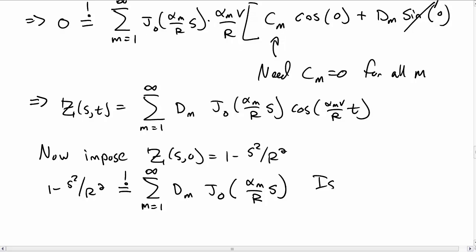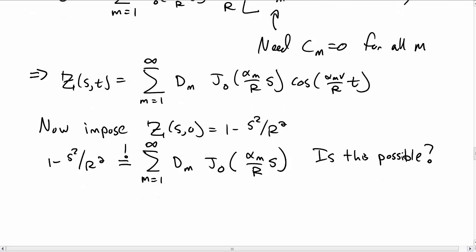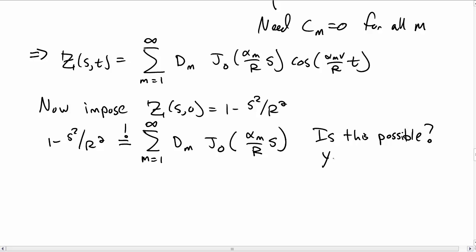So it's kind of an open question at this point, is this even possible? Can you find a way to write 1 minus s squared over r squared in terms of a bunch of j 0's for different m's? And in fact, yes, the answer is yes.